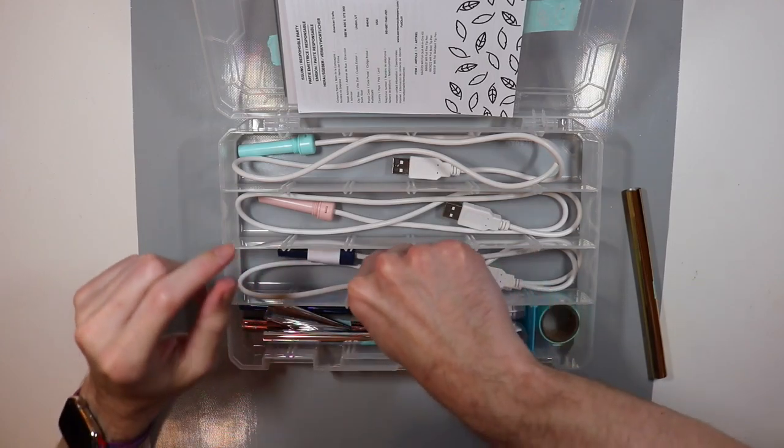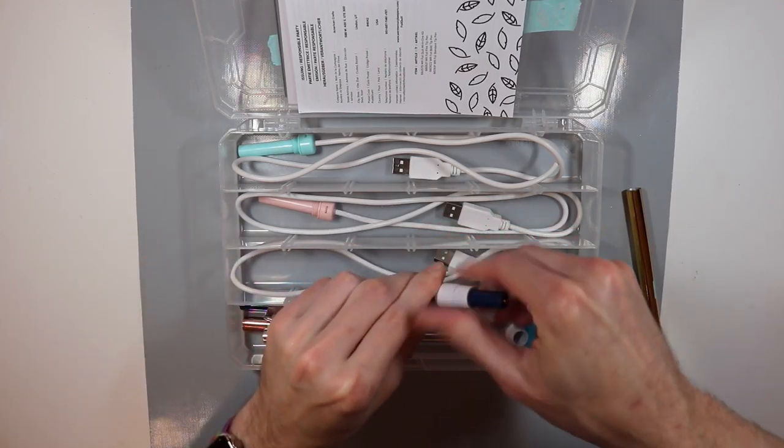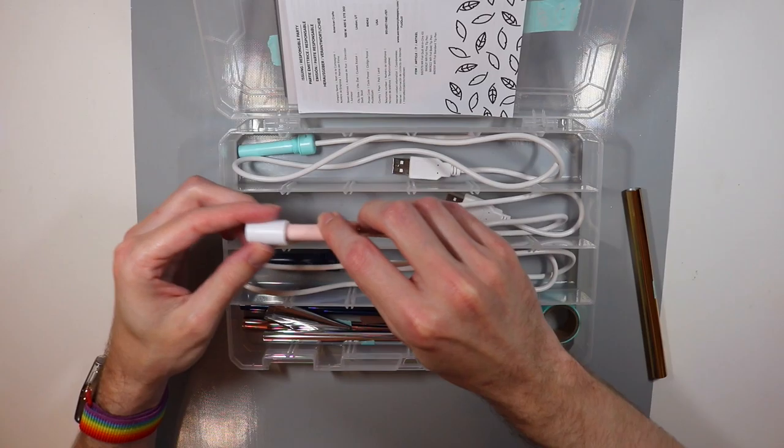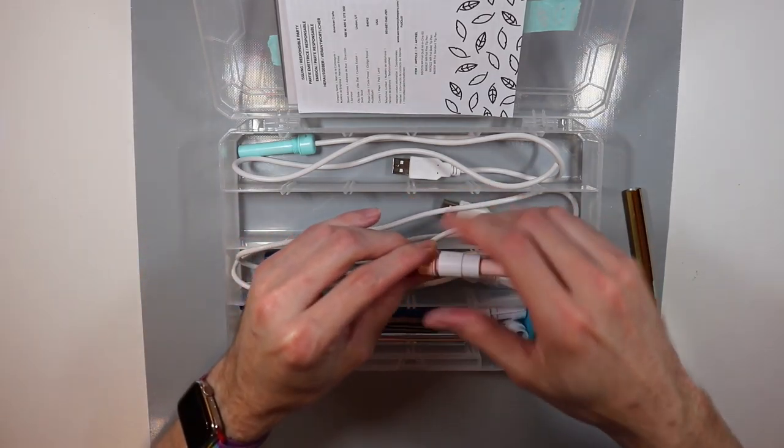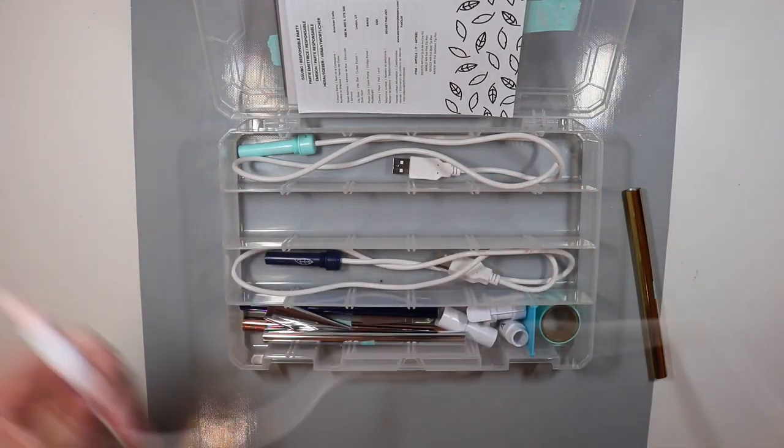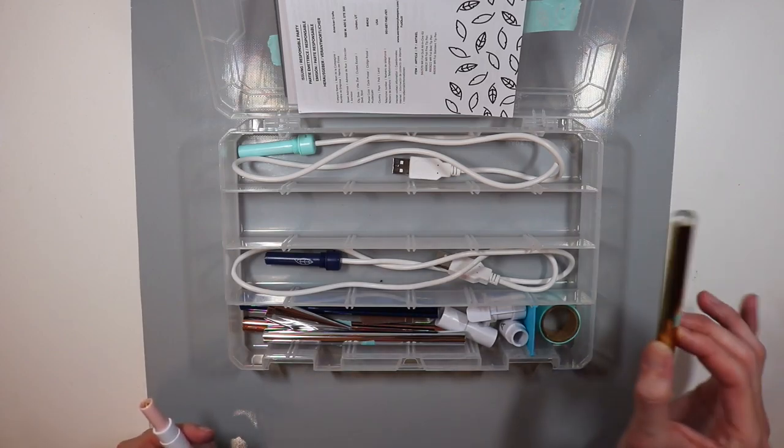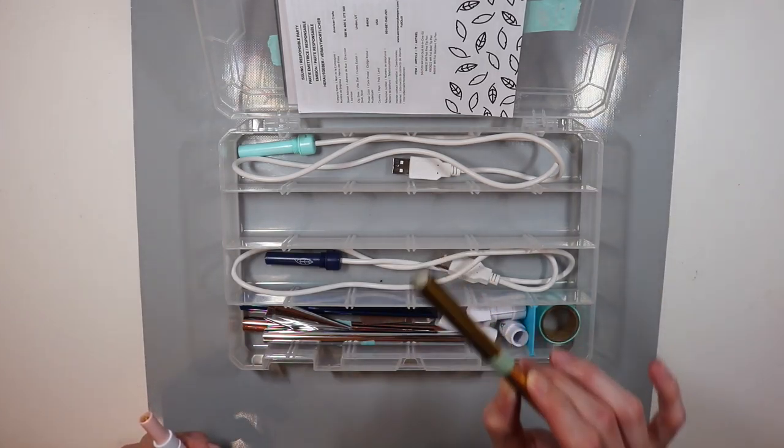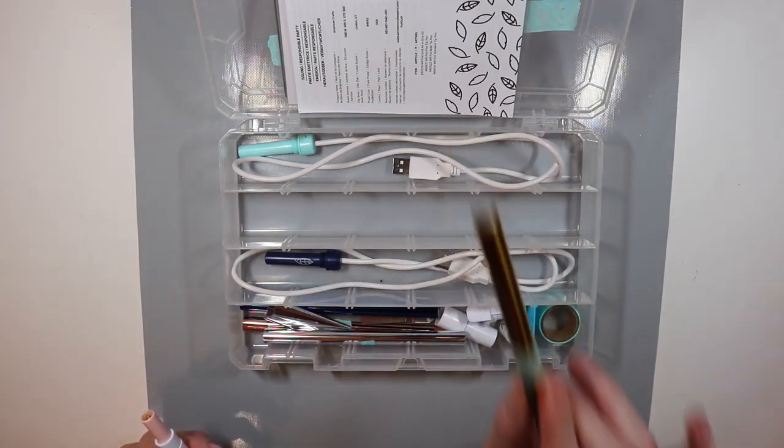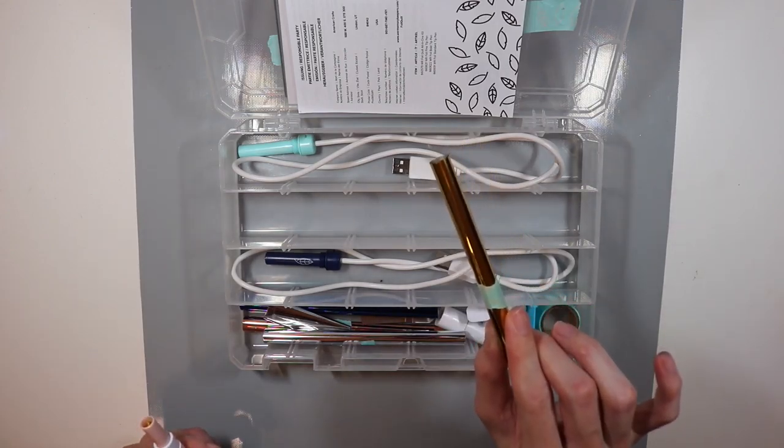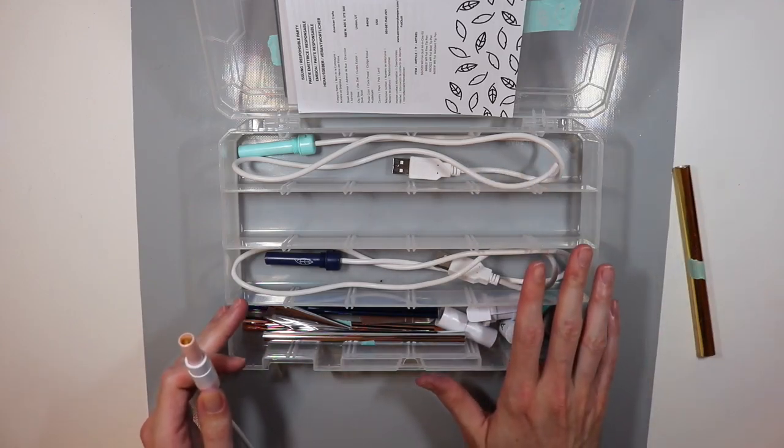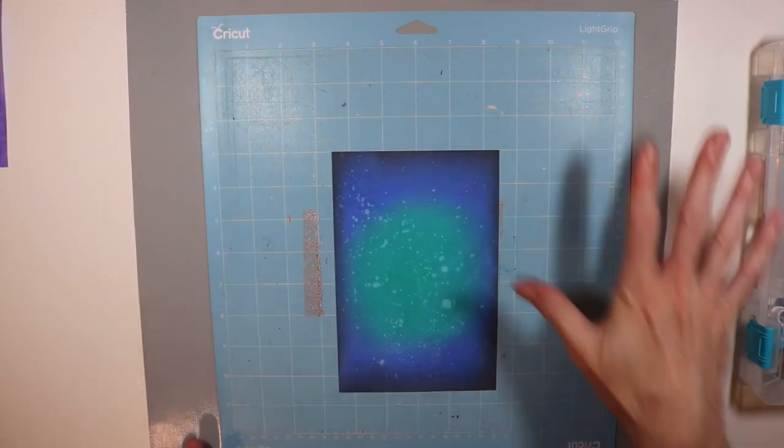For today's adventure, I'm going to use the medium tip quill. I'm going to remove my Cricut adapter and hook that around my middle-sized foil quill, and I'm going to be using some gold foil today. Let's go ahead and get the tip warmed up and ready to go and get the Cricut mat set up.